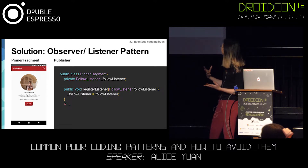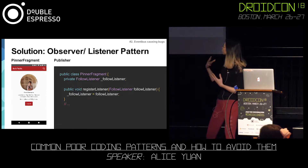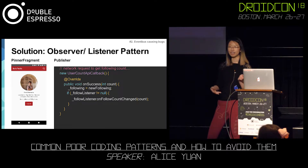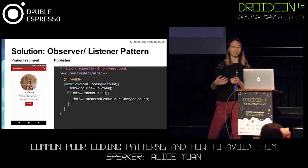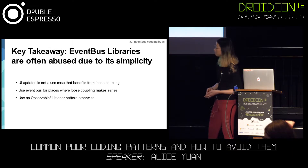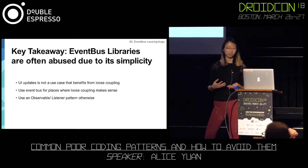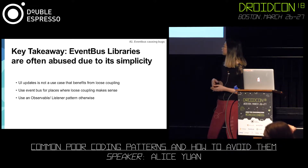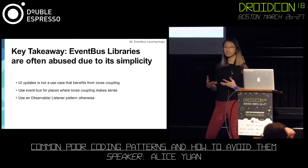On the actual publisher side, I have to register that listener somehow. So I create the method in order to register that listener, and now I have an instance of it. When the API callback comes back, I have the success of that following count and I'm updating that listener and notifying that the count has changed. So our key takeaway here is that event bus libraries are often abused due to their simplicity. UI updates require tight coupling, and so event bus is not a great use case for this. We should use event bus where loose coupling makes sense — logging, performance, and things where the client does not depend on those events being sent.